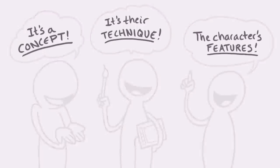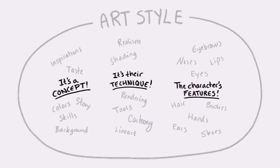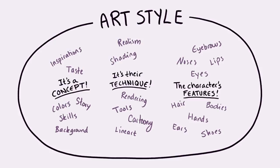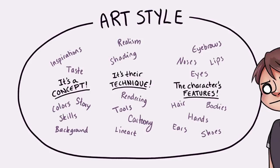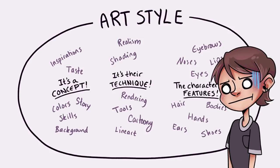Here's what I think. I think an art style is all of those things mixed together. In my opinion, an art style is the technique, the tools, the inspirations, the features, the brush strokes — basically everything about the way an artist draws. And that sounds like so many things, right? So no wonder people are struggling finding their style, because there are way too many parameters in this equation for one person to handle at the same time.